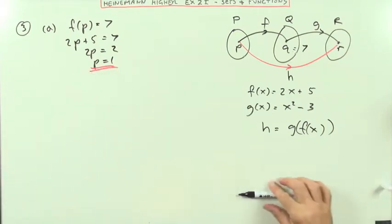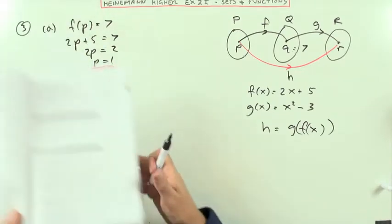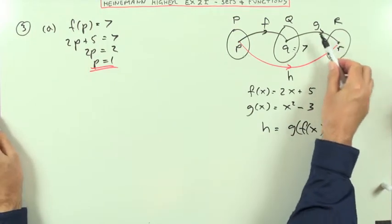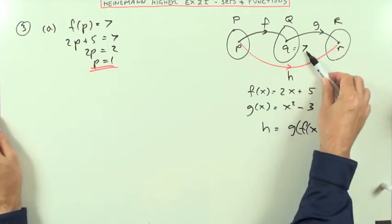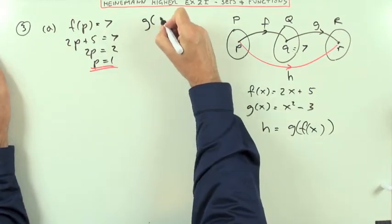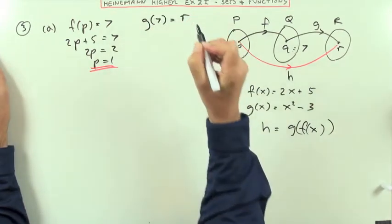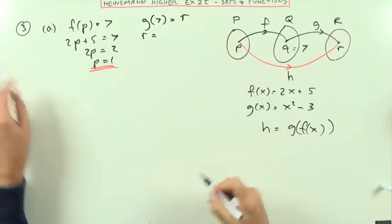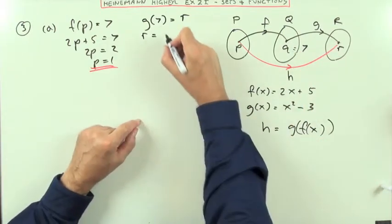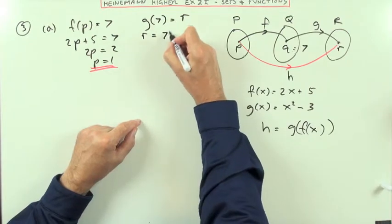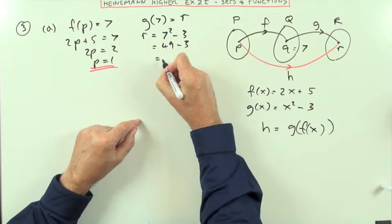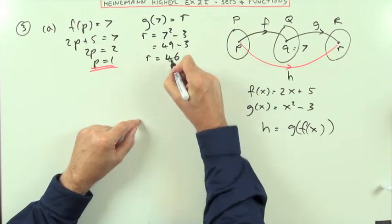Second part said what's the value of r? Well how do you arrive at r? Well g would act on 7 to produce r. So g acting on 7 gives you r. What does g do to anything it gets hold of? It squares it and it takes away 3. So if it gets hold of that 7, it's going to square it and take away 3. So that's 49 take away 3, so r is going to be 46.